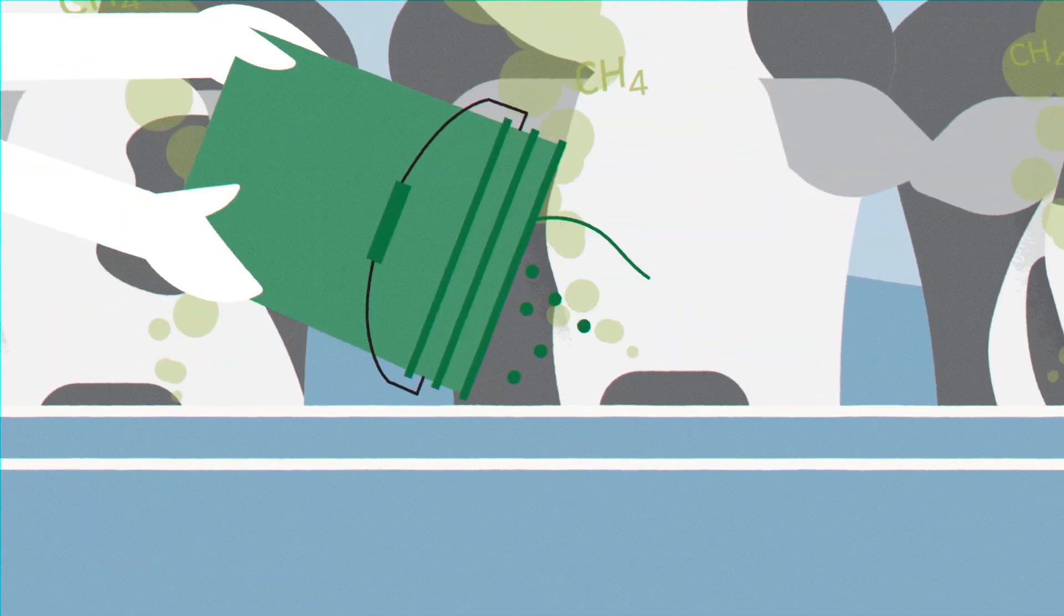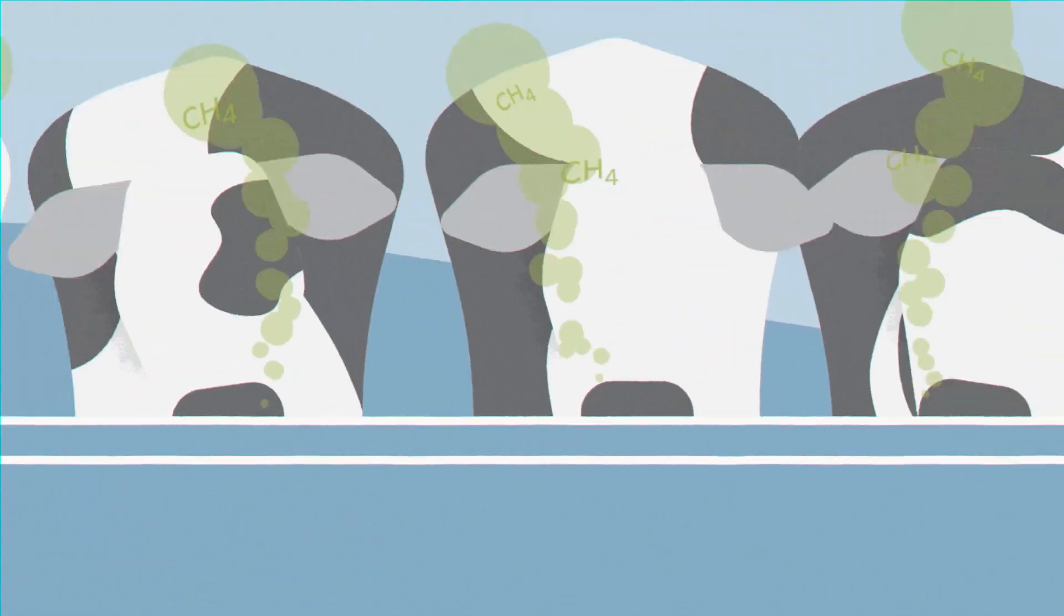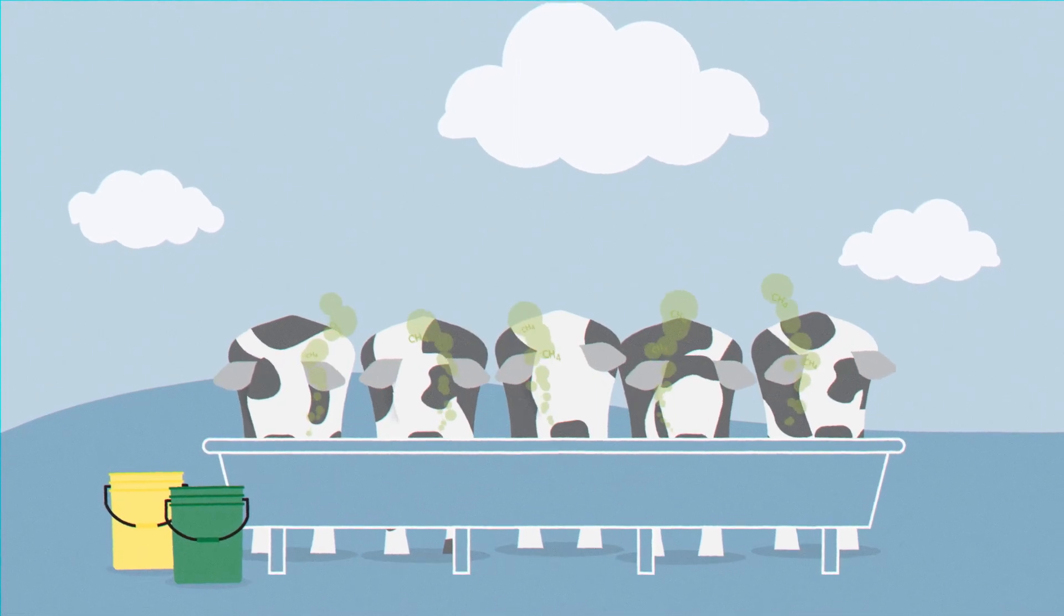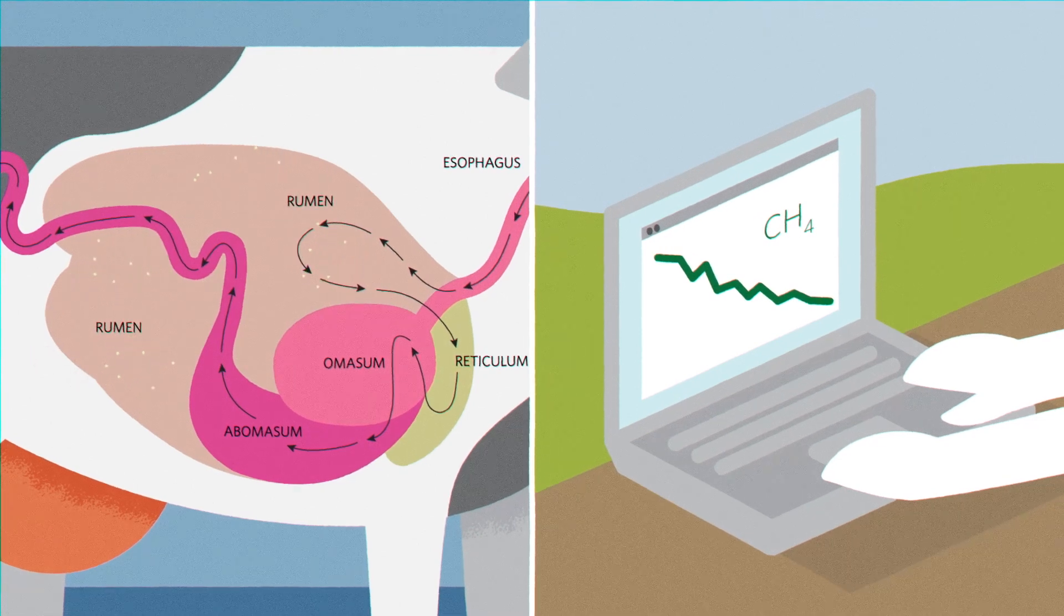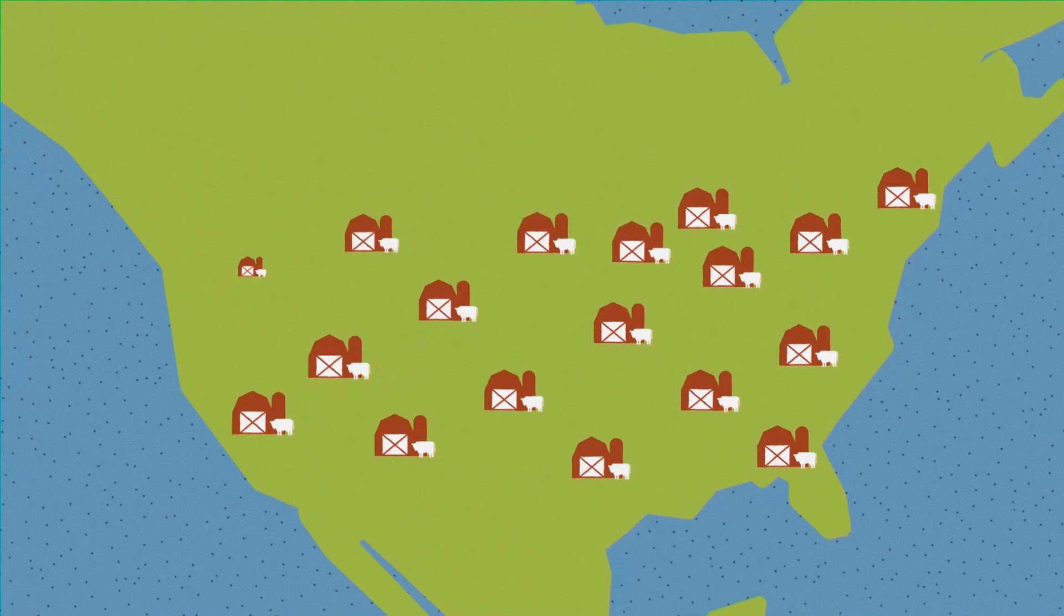We can help farmers try new feed ingredients or additives that reduce the amount of methane cows produce. Lessons learned from our pilot projects in the Midwest can help farmers across the country replicate efforts on their own farms.